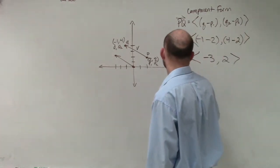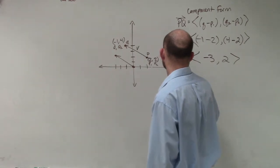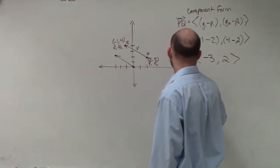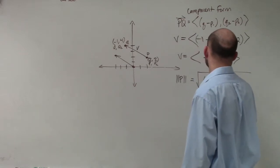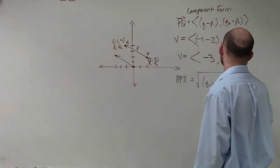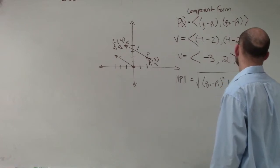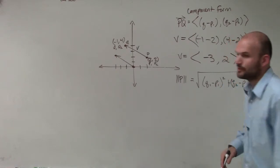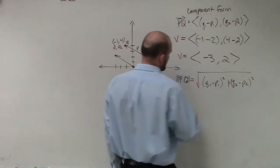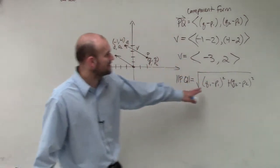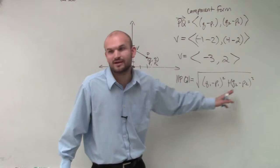So remember, the magnitude of PQ is the square root of Q1 minus P1 squared plus Q2 minus P2 squared. Well, remember what I was talking about. Oh, it's PQ. Remember what I was talking about, ladies and gentlemen. We already know that these are going to equal V1 and V2, right?